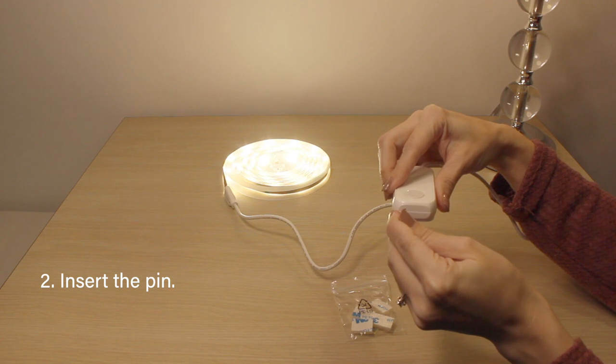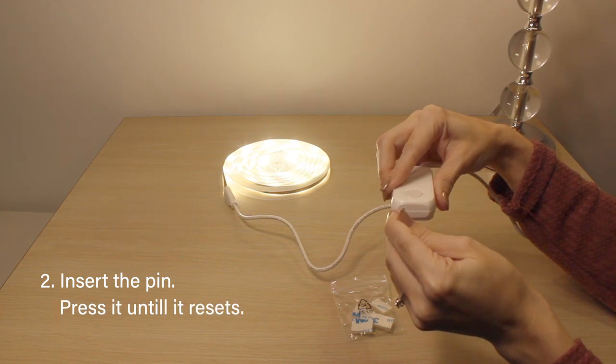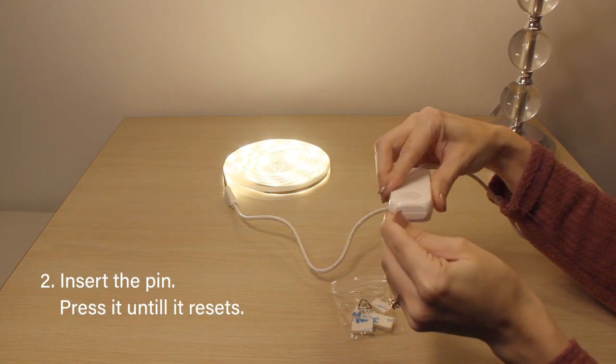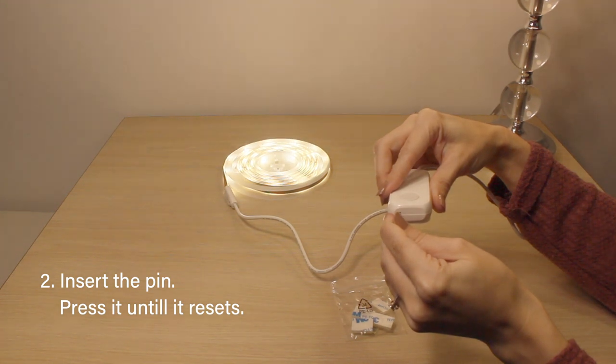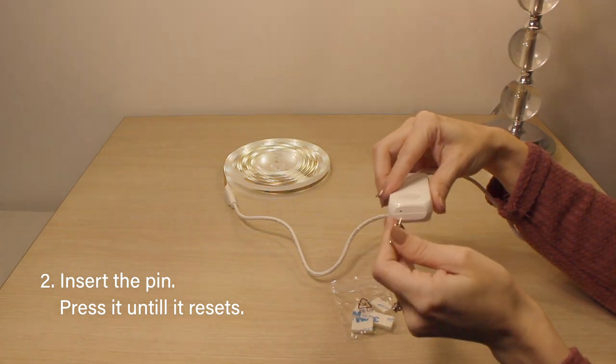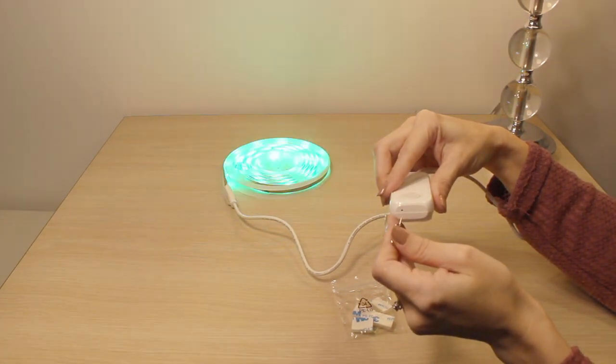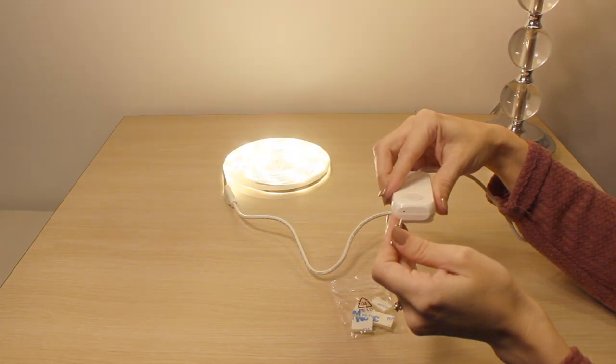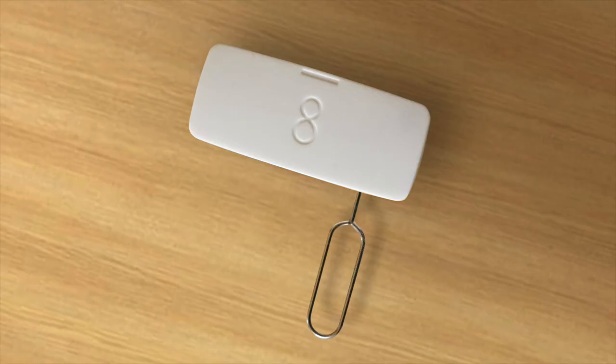Take the pin and insert it into the pinhole. You will feel some resistance as you press down and you want to hold for 5 to 8 seconds. When you do, this will reset the device and you should see some indication on the LED strip. On the door sensor, you will not see any indication, but it is reset.